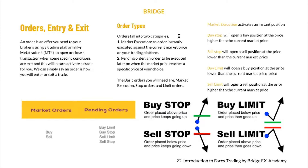Orders fall into two categories. The first category is called market execution — an order instantly executed against the current market price on your trading platform. For example, if I tell you to buy USDCAD right now, that is market execution. You can see it on the platform: market order, this is buy, this is sell — instant buy and instant sell. Instant execution is the same thing as market execution.